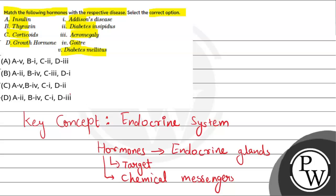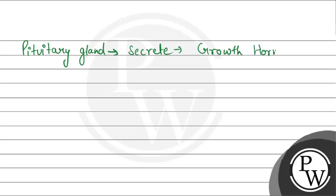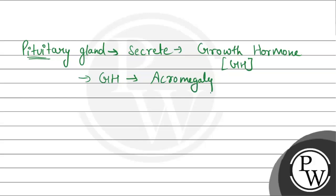Let's understand the different hormones secreted by different glands. The pituitary gland, also known as the master gland of the body, secretes growth hormone (GH). Growth hormone induces growth in the body. If the pituitary gland malfunctions and releases an excess amount of growth hormone, it can lead to a condition known as acromegaly, where abnormal growth occurs in that individual.